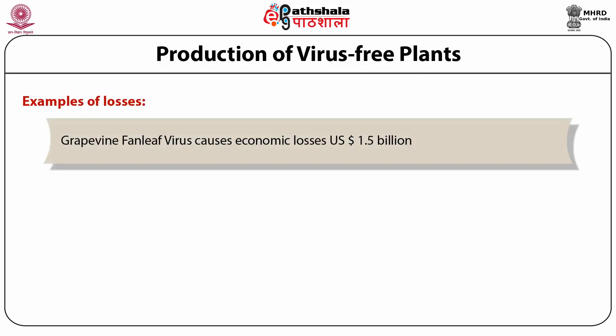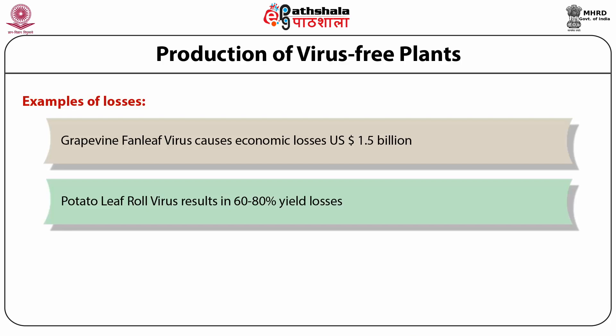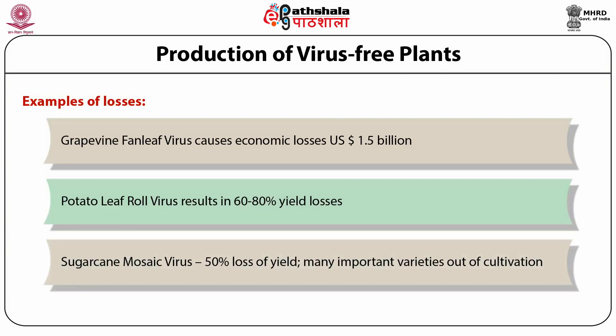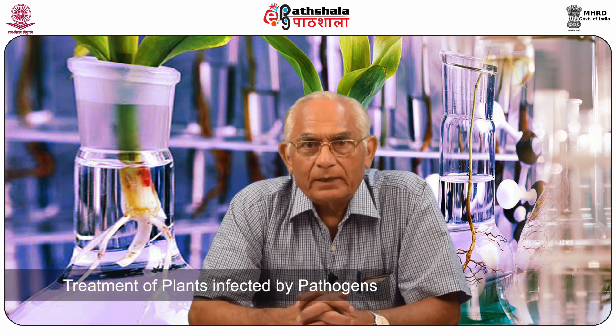To give examples of losses: the grapevine family virus causes economic losses to the tune of 1.5 billion US dollars — that is just one virus. The potato leaf roll virus results in 60 to 80 percent yield losses. The sugarcane mosaic virus drops the yield by 50 percent, and many important varieties of sugarcane have gone out of cultivation because of the accumulation of virus over the generations.